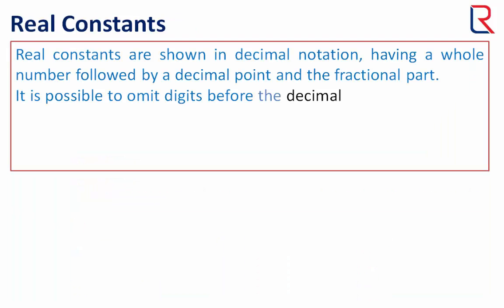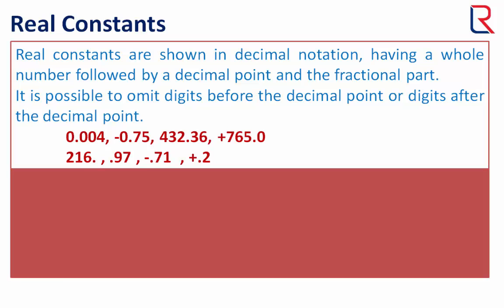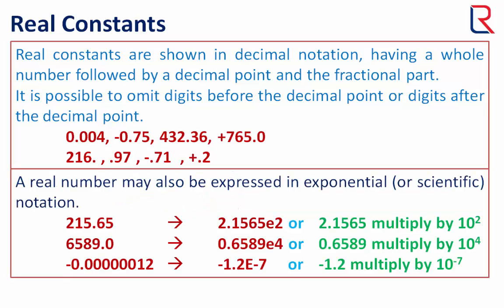Now let's see real constants. Real constants are shown in decimal notation having a whole number followed by a decimal point and the fractional part. It is possible to omit digits before the decimal point or digits after the decimal point. A real number may also be expressed in exponential or scientific notation. Here are some examples. We use e or E to represent the exponential form.